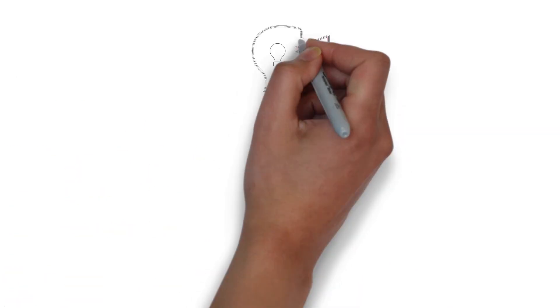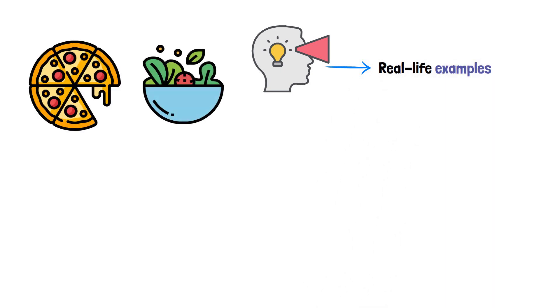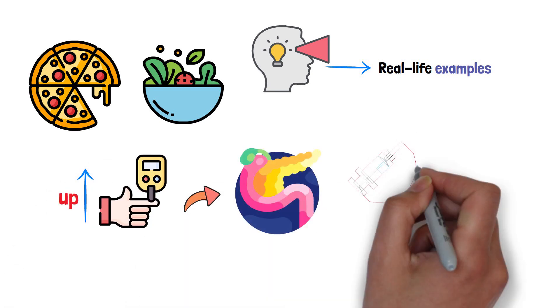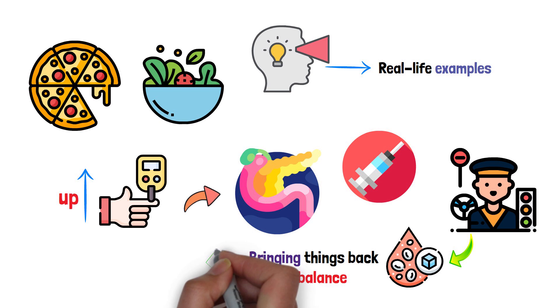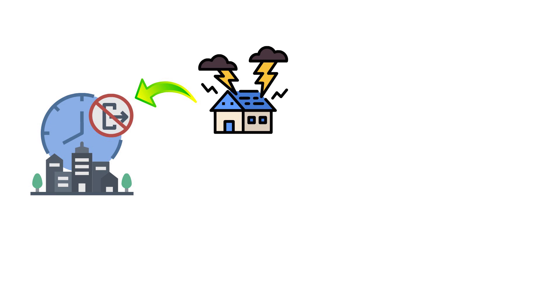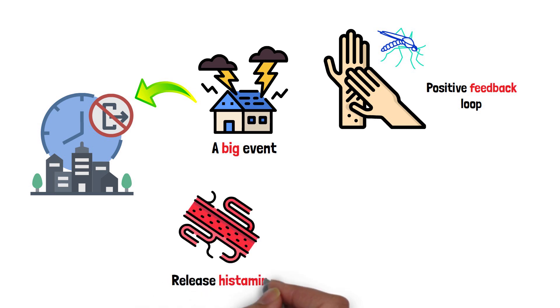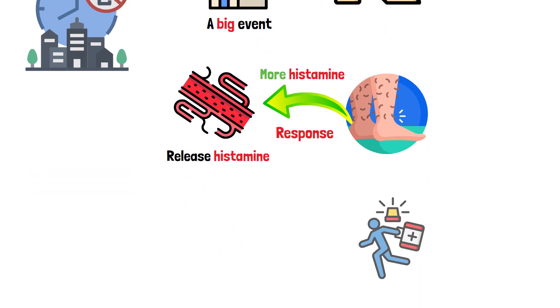Let's put this into perspective with some real-life examples. After you eat a big meal, like pizza and salad, your blood sugar levels go up. The pancreas steps in, sending out insulin like a traffic controller, directing excess sugar into cells and bringing things back to balance. This is homeostasis in action, like a city restoring order after a big event. And when you scratch a mosquito bite, you're triggering a positive feedback loop. Damaged cells release histamine, causing swelling, which can lead more cells to release histamine, escalating the response. It's like a small incident in a city that spirals into a larger event.